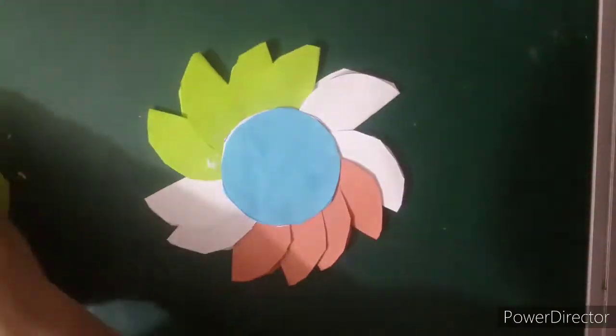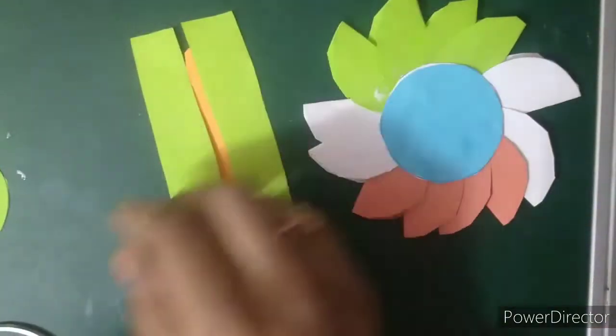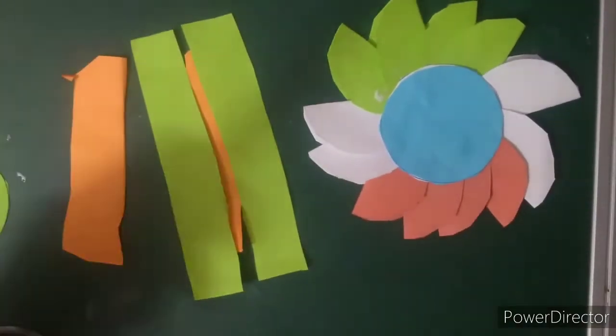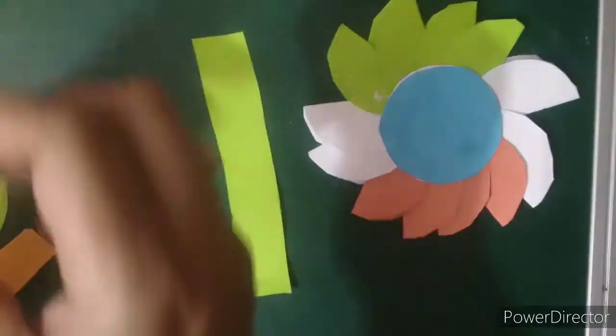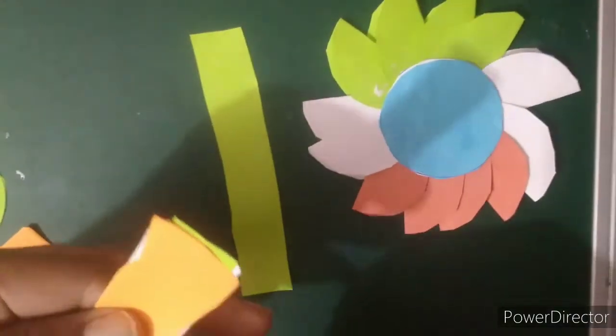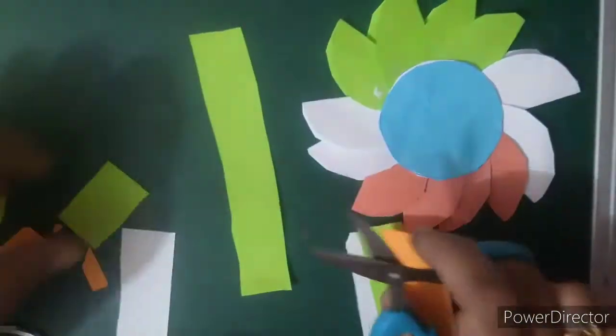Now what I will do, I will take some strips of green, orange, white. I will cut it into same part. Orange is smaller so I will cut it like this in same part. I will require 2 strips of each.